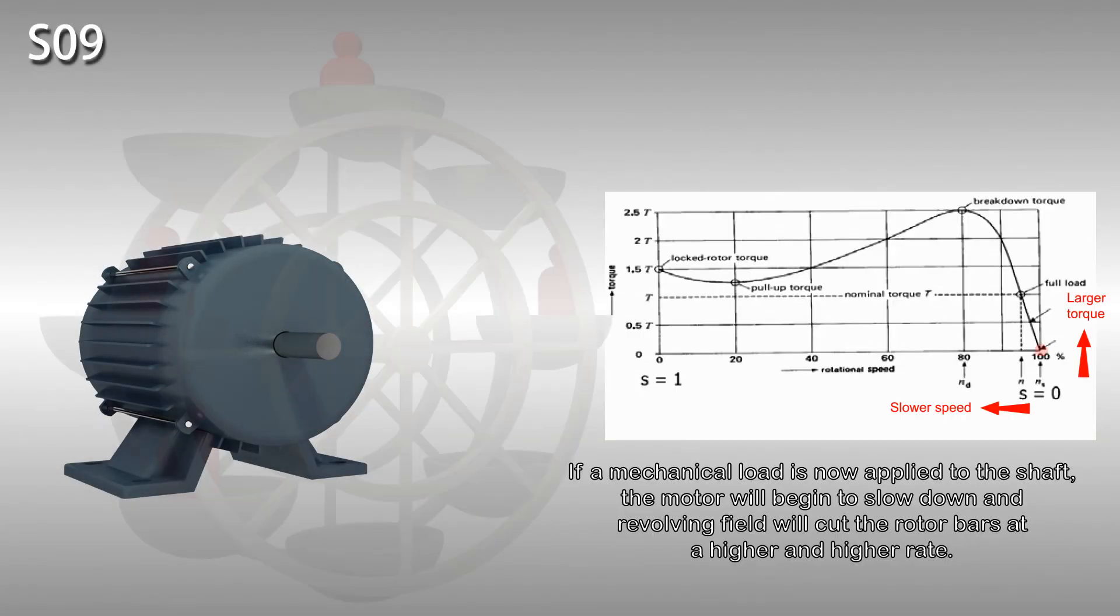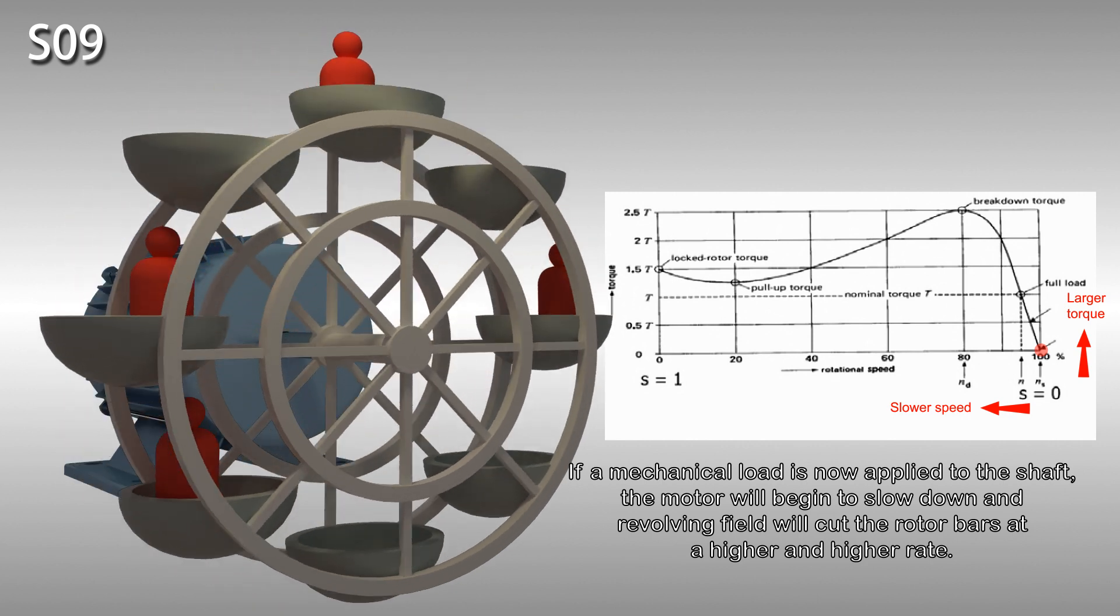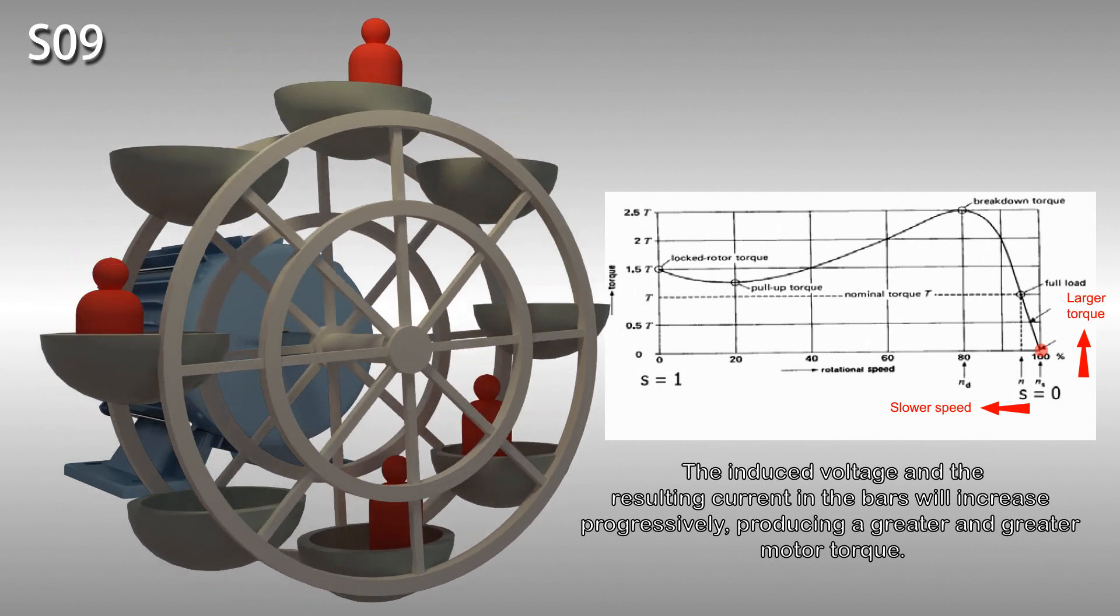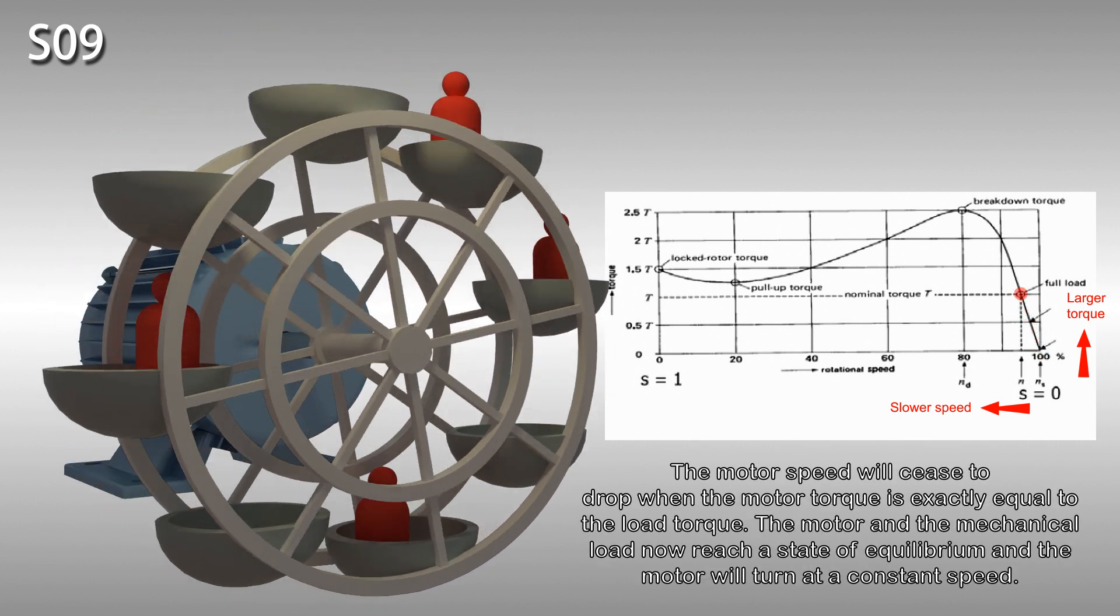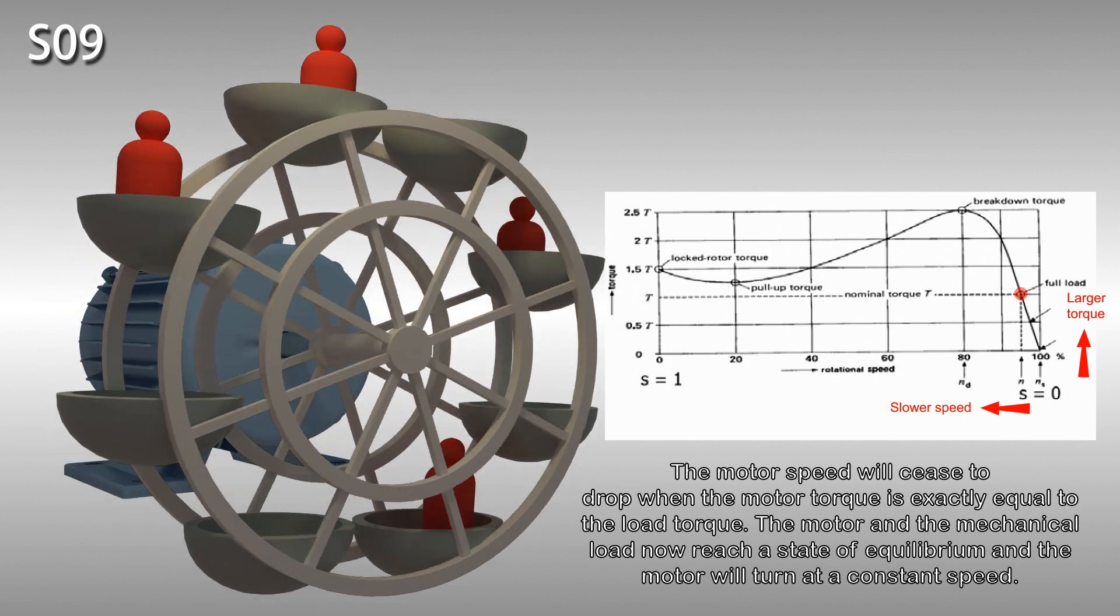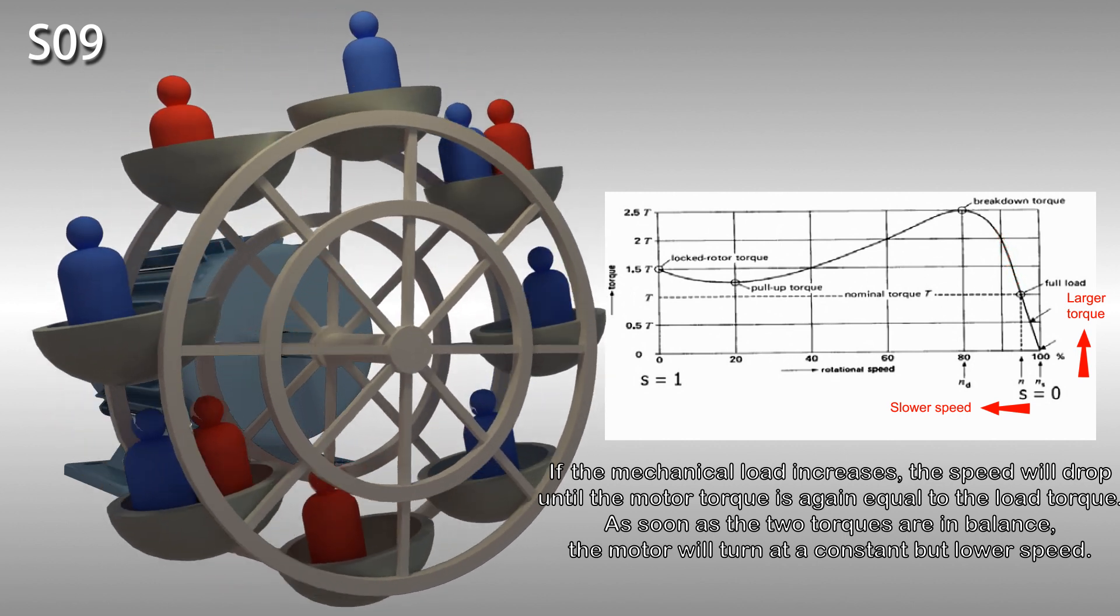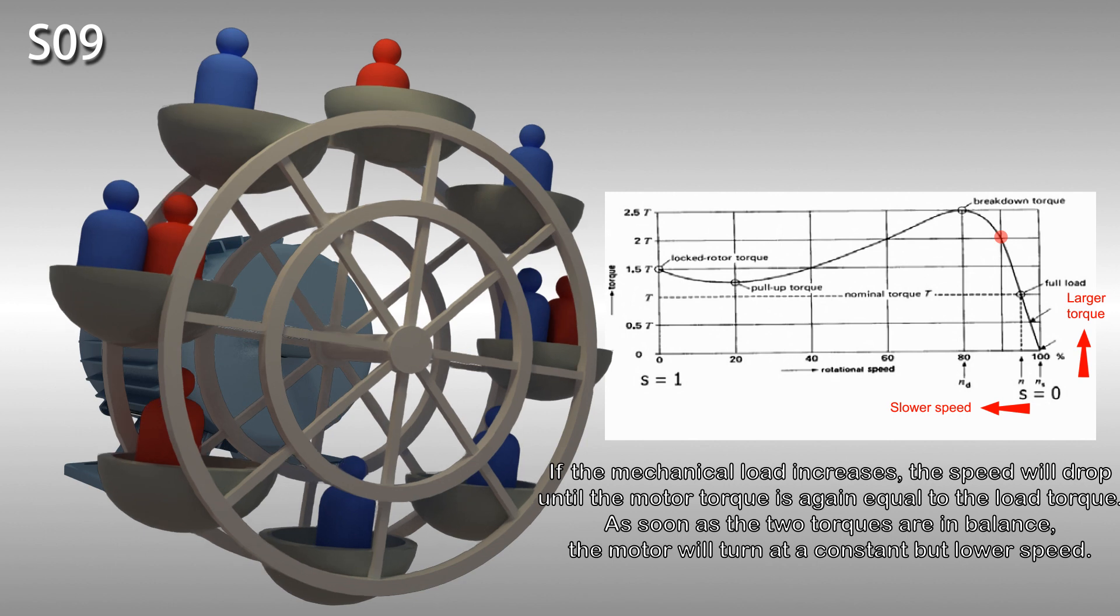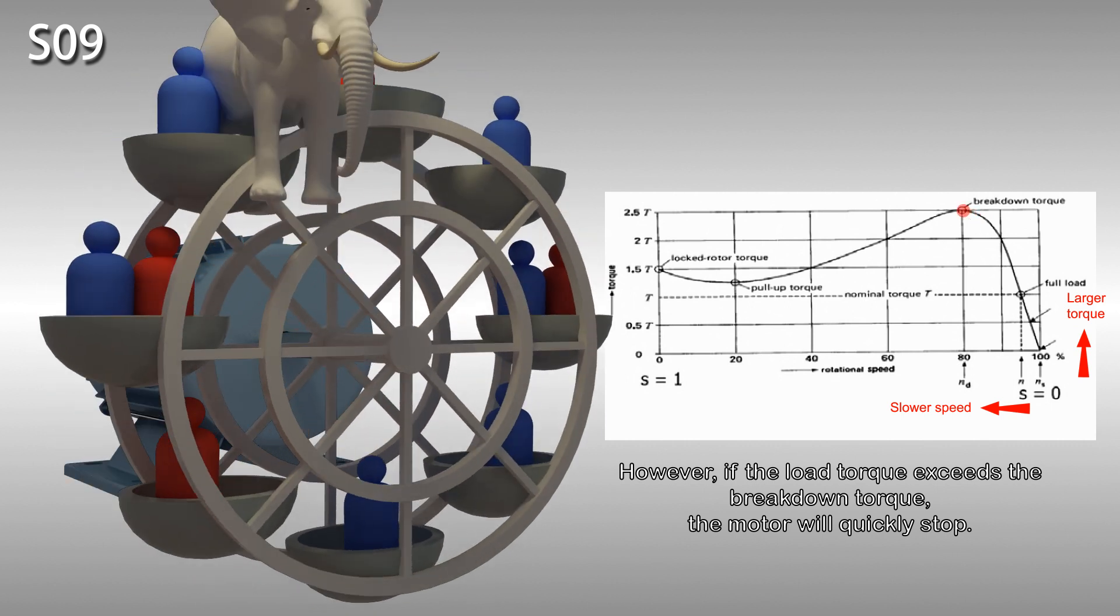If a mechanical load is now applied to the shaft, the motor will begin to slow down and the revolving field will cut the rotor bars at a higher and higher rate. The induced voltage and the resulting current in the rotor bars will increase progressively, producing a greater and greater motor torque. The motor speed will cease to drop when the motor torque is exactly equal to the load torque. The motor and the mechanical load now reach a state of equilibrium and the motor will turn at a constant speed. If the mechanical load increases, the speed will drop until the motor torque is again equal to the load torque. As soon as the two torques are in balance, the motor will turn at a constant but lower speed. However, if the load torque exceeds the breakdown torque, the motor will quickly stop.